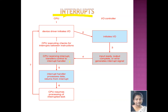Every interrupt has its own interrupt handler, which is the code that tells you how the interrupt has to be handled — what should be done when an interrupt occurs. Once the CPU receives the interrupt, control is transferred to the interrupt handler. When the interrupt handler has done its job, control returns back to where it had started. The CPU, which had stopped what it was doing, will then resume all the interrupted tasks, and this goes on.